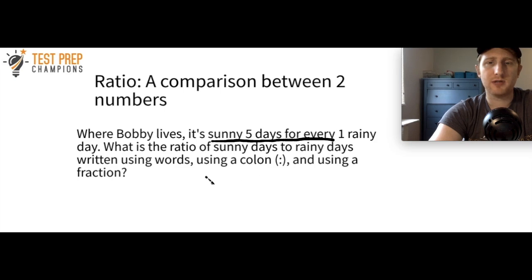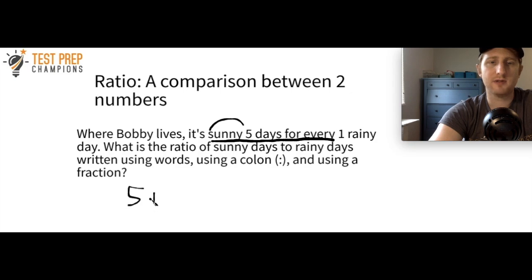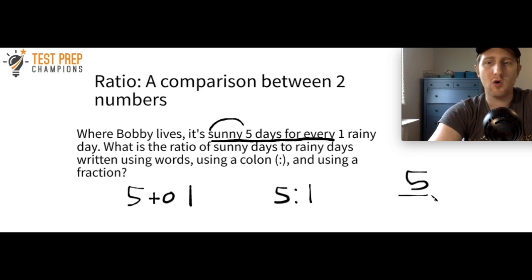The key here is to get the numbers in the right order. If it's asking for the ratio of sunny days to rainy days, we see that it's sunny every five days, so we write five first: five to one in words, 5:1 with a colon, and five over one as a fraction. If you write one to five, that gives the ratio of rainy days to sunny days, which would be the wrong answer on your test.